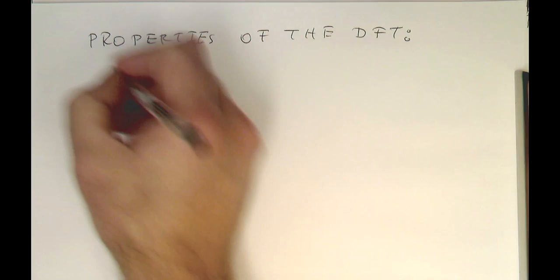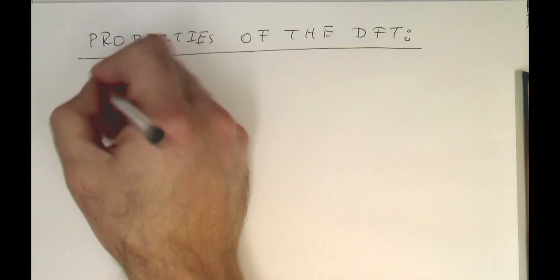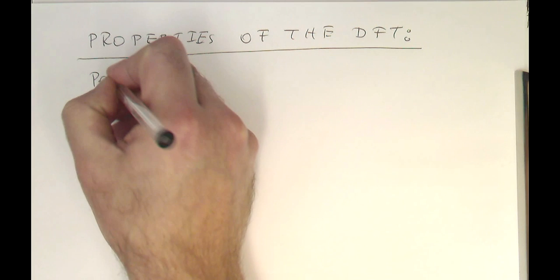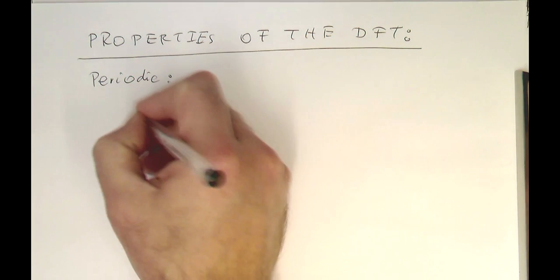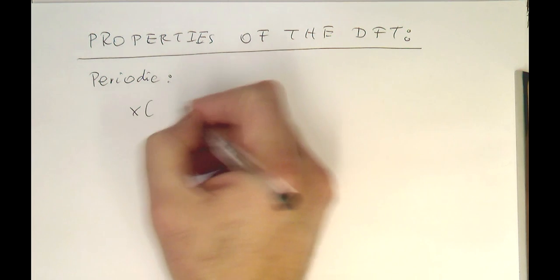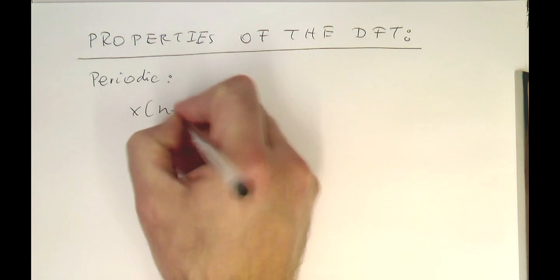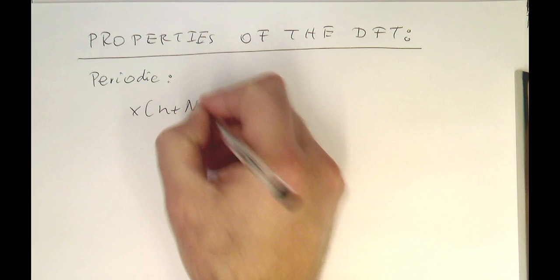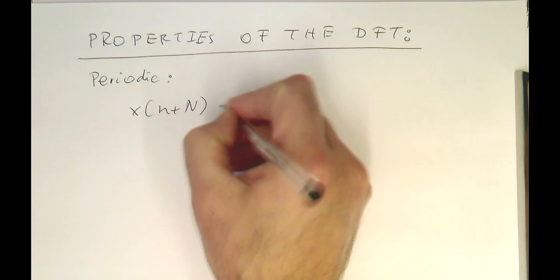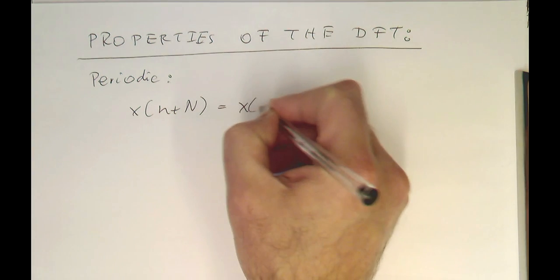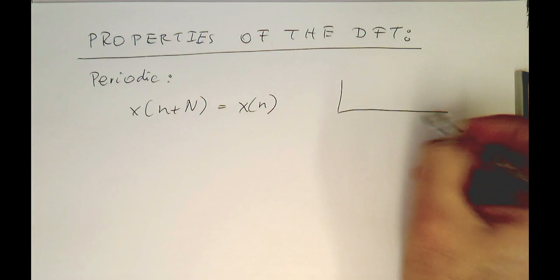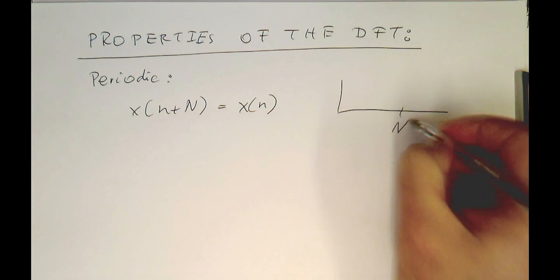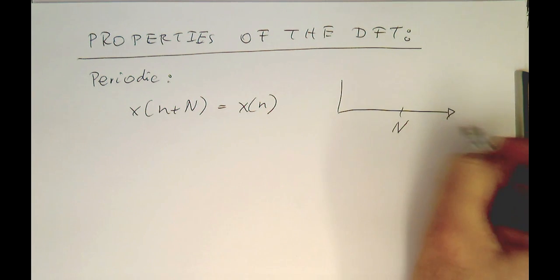We know that the DFT is periodic. Essentially, if we have x of n plus capital N, the length of the sequence is x of n. So we know that the DFT repeats after N samples.